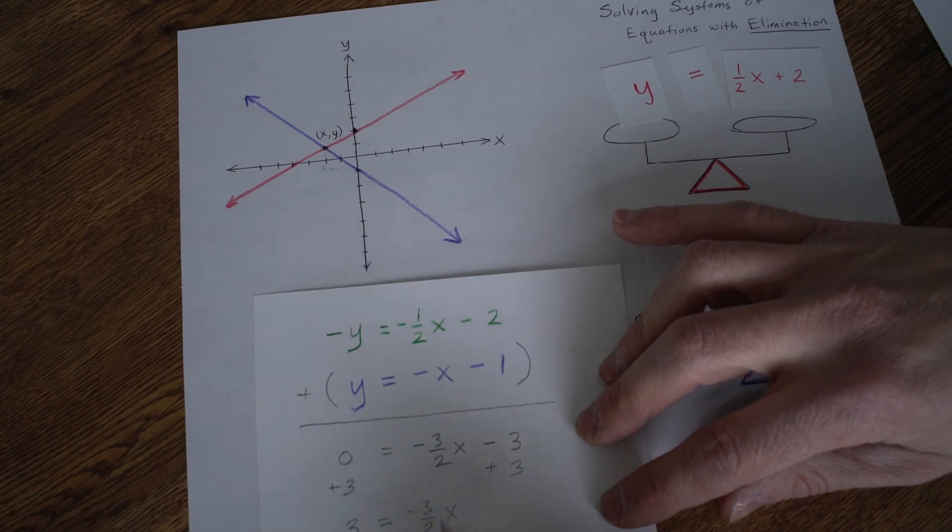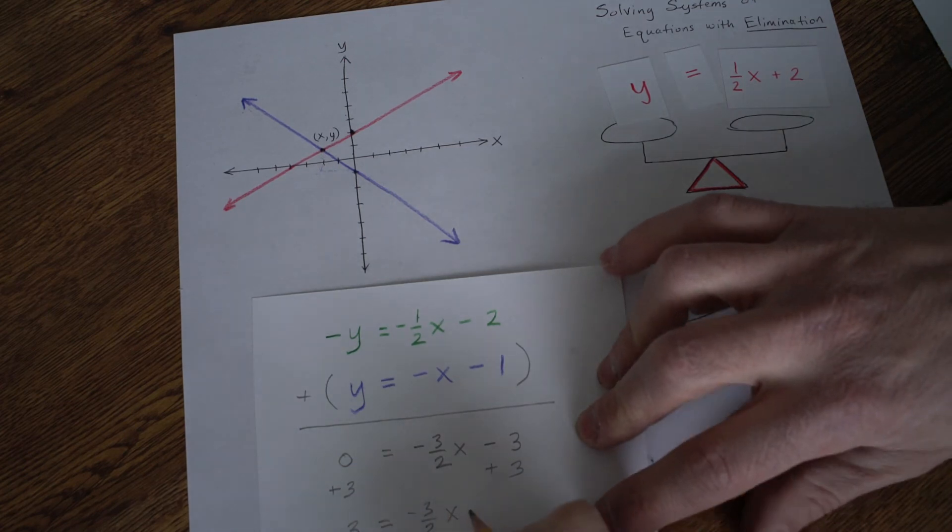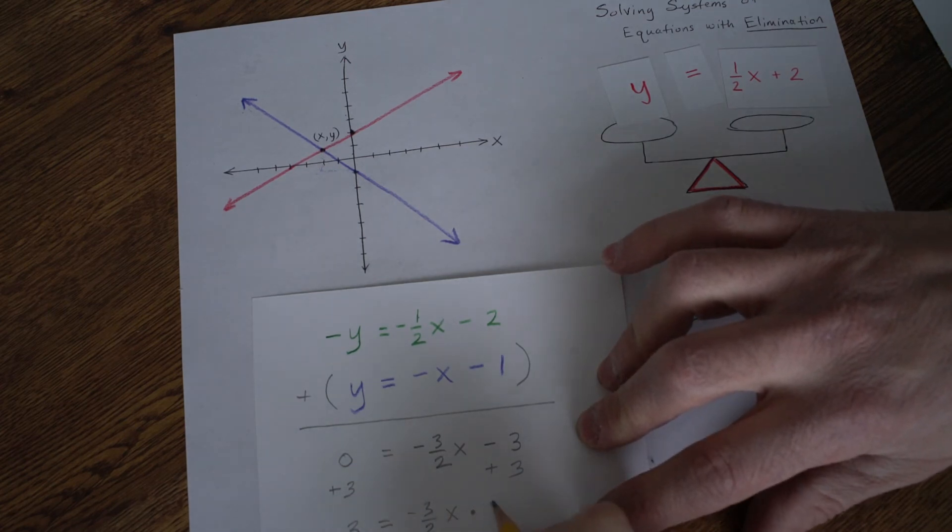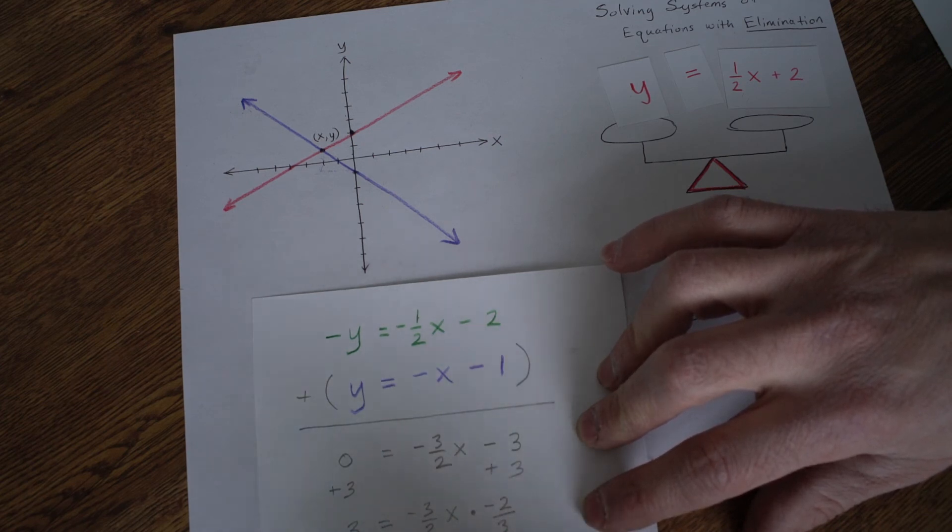How do we get rid of this negative 3 halves? I've explained it before and you should learn this because it is amazing. This is called multiplicative inverse property. It just demolishes fractions. Because negative 3 times negative 2 is negative 6. And then we have, oh no.